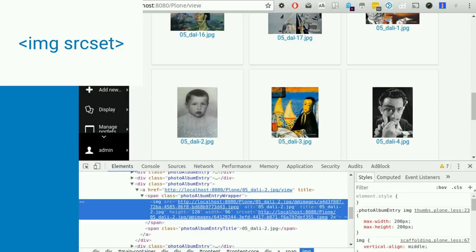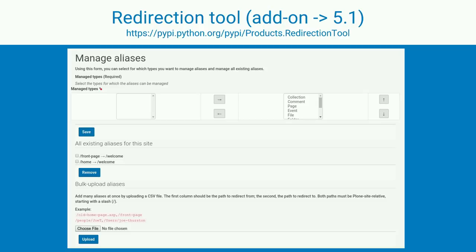This is a big UI win. Another feature just finished at a sprint last week in Finland is the redirection tool. There was always a redirection tool in Plone where you put an alias for a URL that points to another content item, but it was hidden with no easy web interface. Now there is one, and it will be released in 5.1.